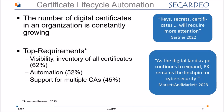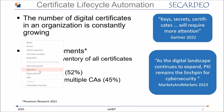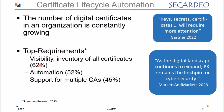The top requirements — this is a collection of requirements from Ponemon Research, and this is what we also see in our talks with our customers. The topic around visibility, the inventory of all certificates, is required. Then, very important, is automation, which is the topic we are discussing here. And also the support for multiple CAs — not only one CA, but two, three, perhaps more CAs that have to be covered.